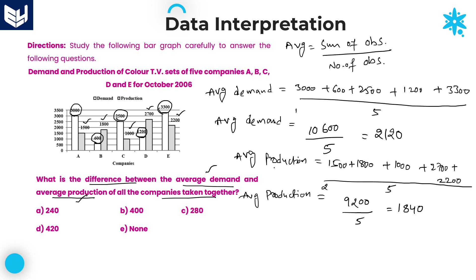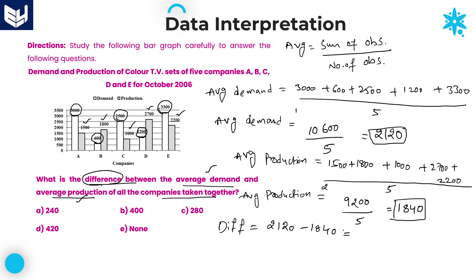Average demand is 2120 and average production is 1840 for all five companies together. The difference is 2120 − 1840 = 280. Option C is the right answer for question 2.